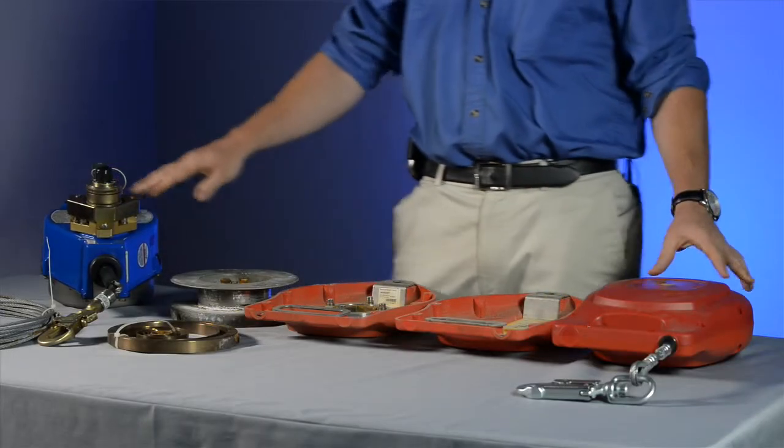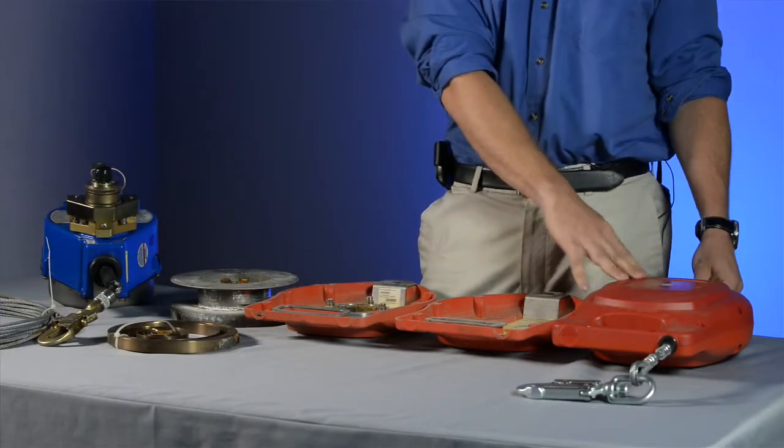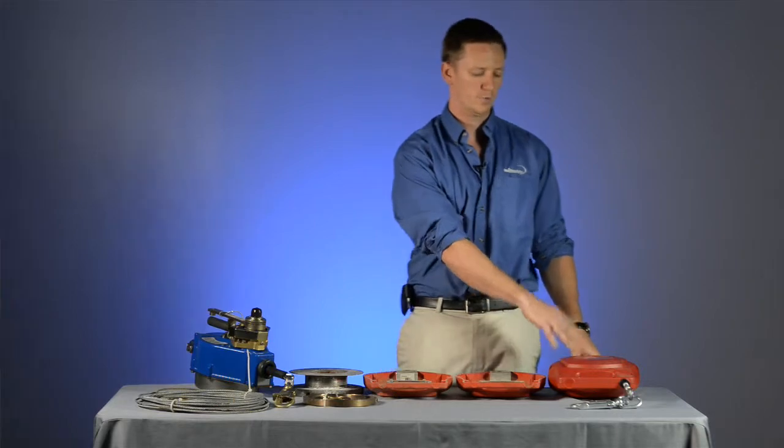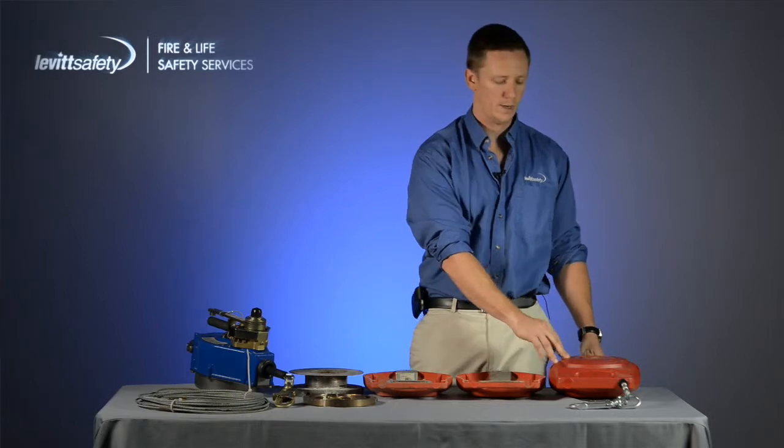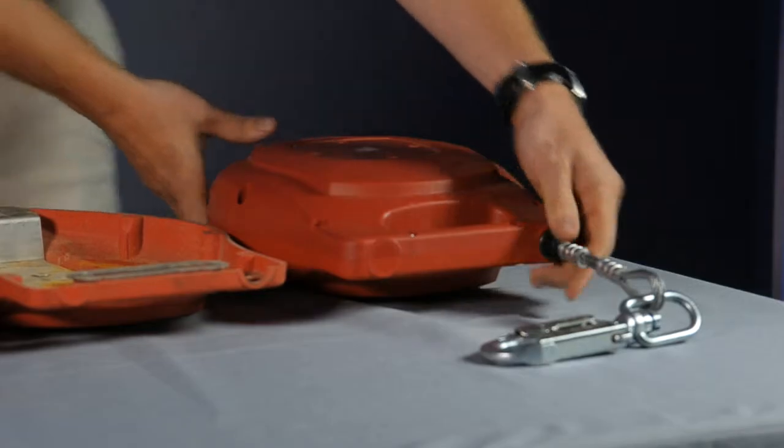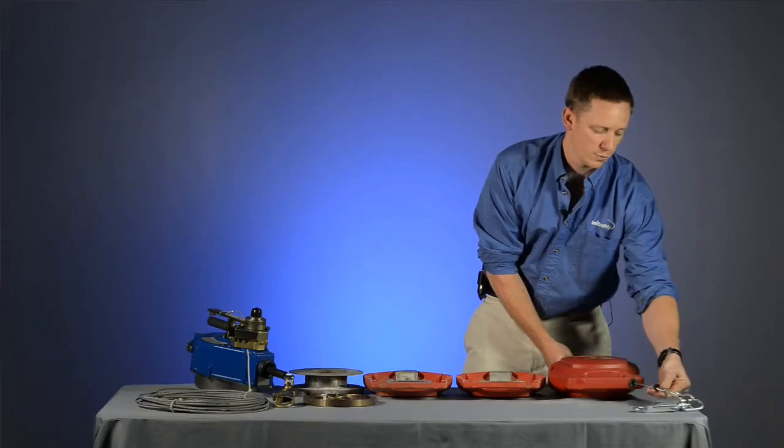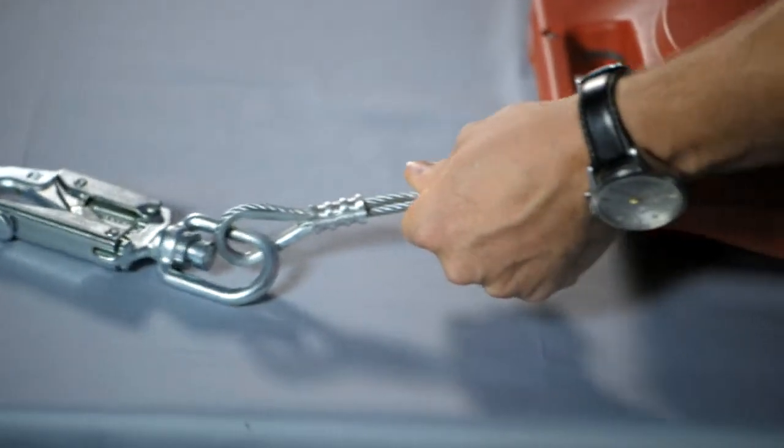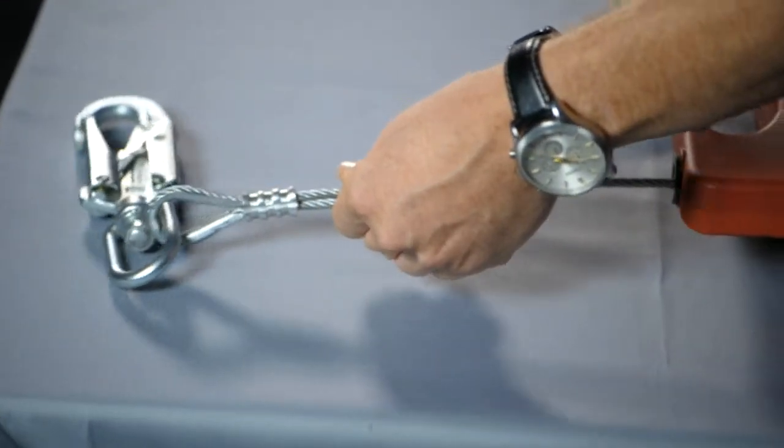Any unit that comes into our shop, the first thing we'll do is an overall inspection of the housing of the unit, the exterior of the housing. We then mount it up on a hook and we deploy the cable. The first thing we're checking for is the tension on the cable.